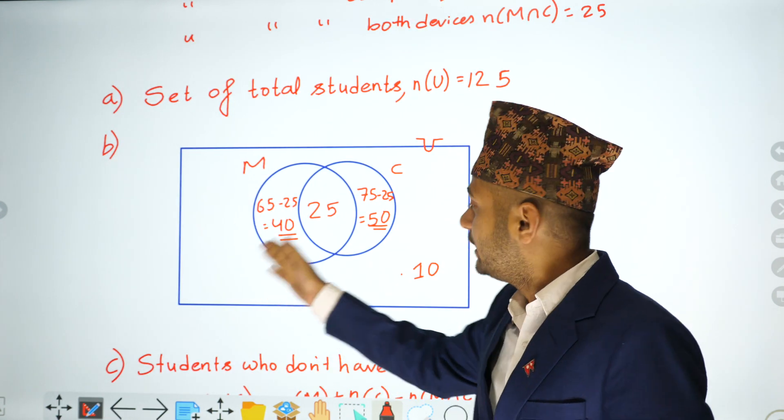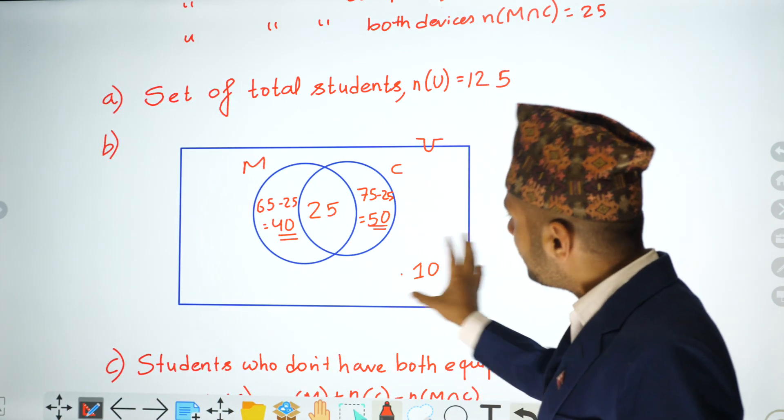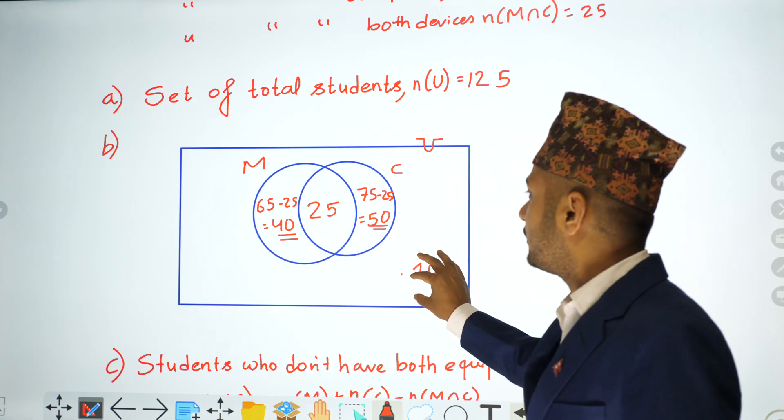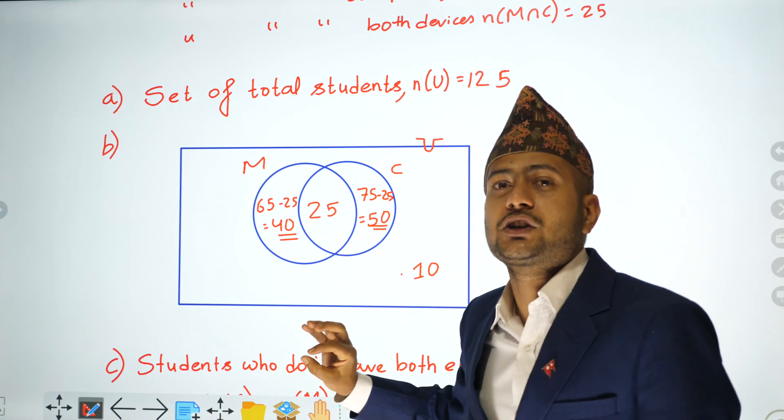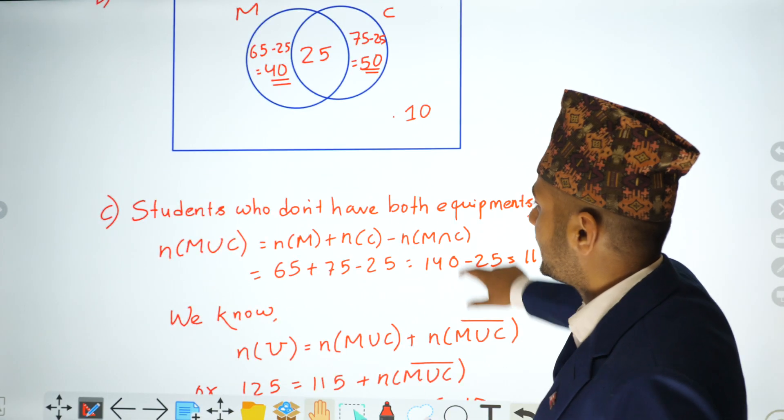Whether mobile only or computer only — students with only one equipment: 90. Students with no equipment: 10.